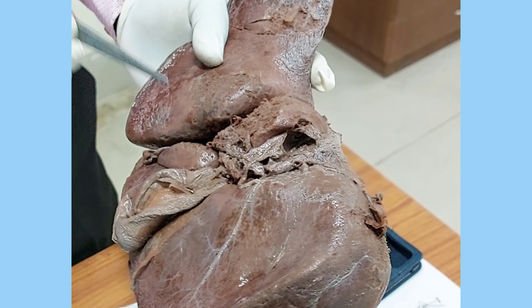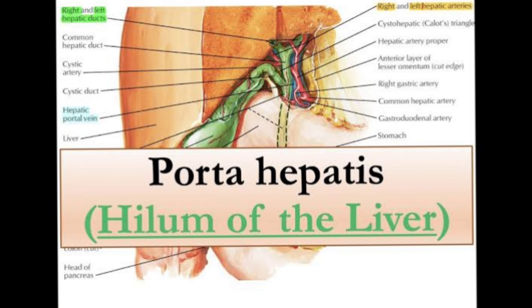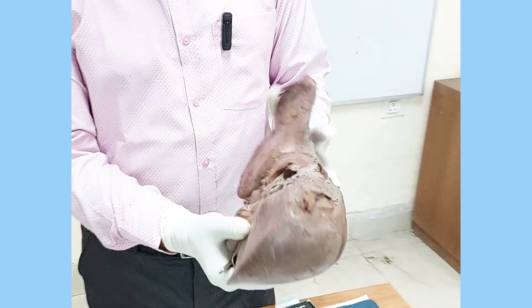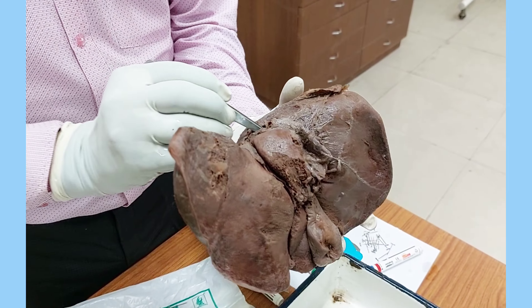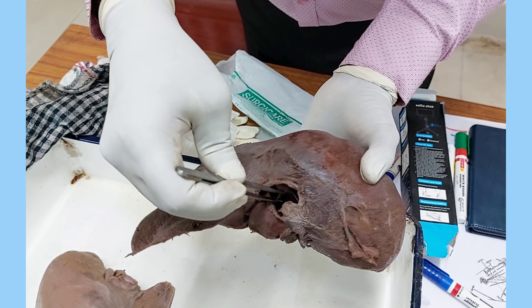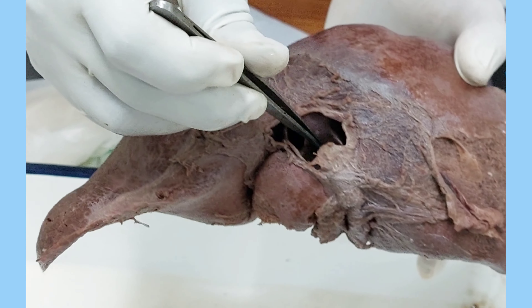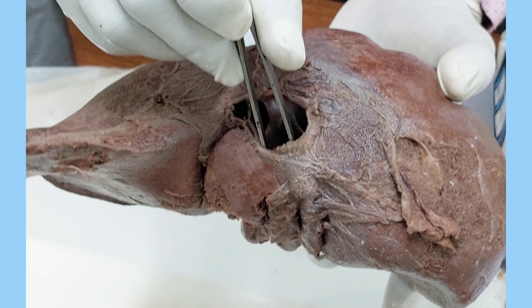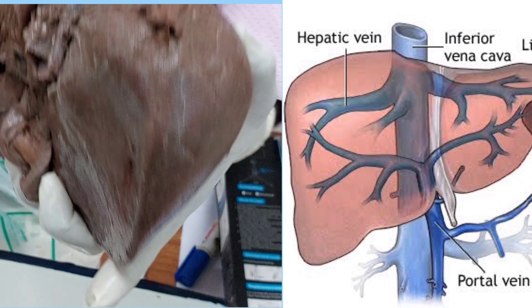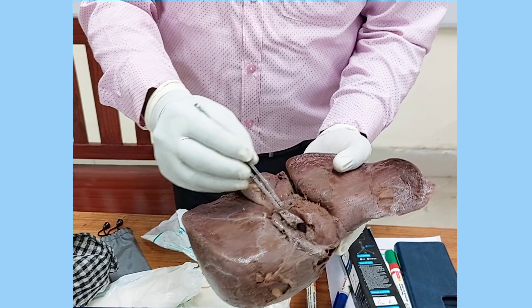What are the structures passing through the Porta Hepatis? It is sometimes considered the hilum of the liver, but truly speaking it is not, because in a true hilum all structures either entering or coming out must pass through it. However, the hepatic vein is the only structure that does not — it comes out through the floor of the groove for the inferior vena cava and drains directly into the inferior vena cava. Because of this, Porta Hepatis is not considered a true hilum.